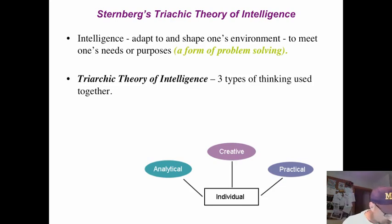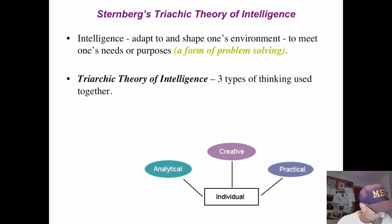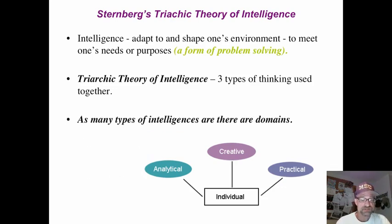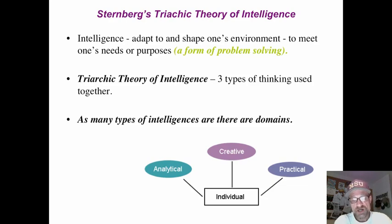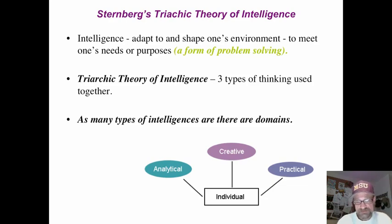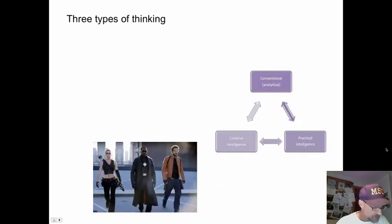The Triarchic Theory of Intelligence says three types of thinking work together to solve these problems, to create products, or to enable outstanding performances. There are as many types of intelligences as there are domains. So in any domain, if you can solve problems, create products, or shape environments using these three types of thinking, that is a type of intelligence.